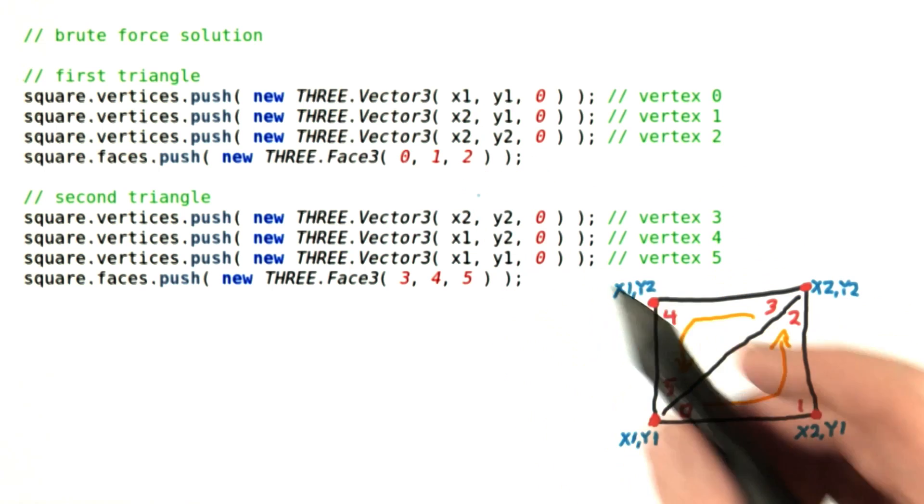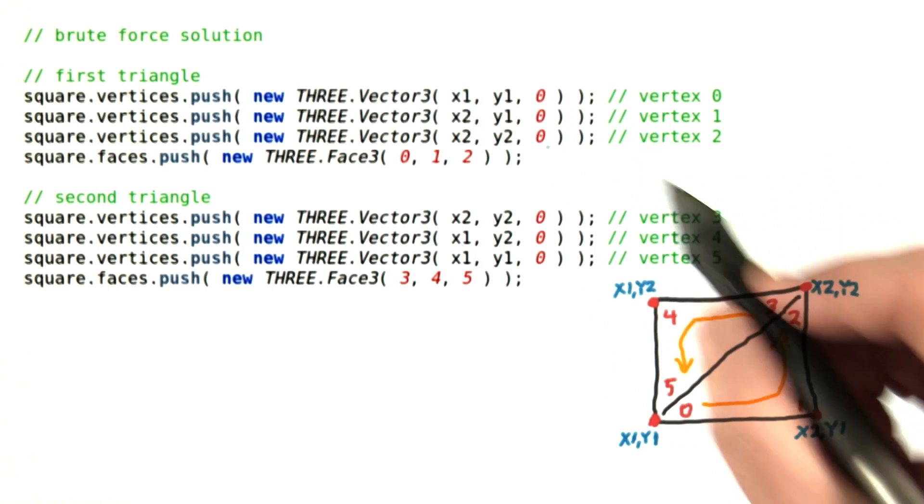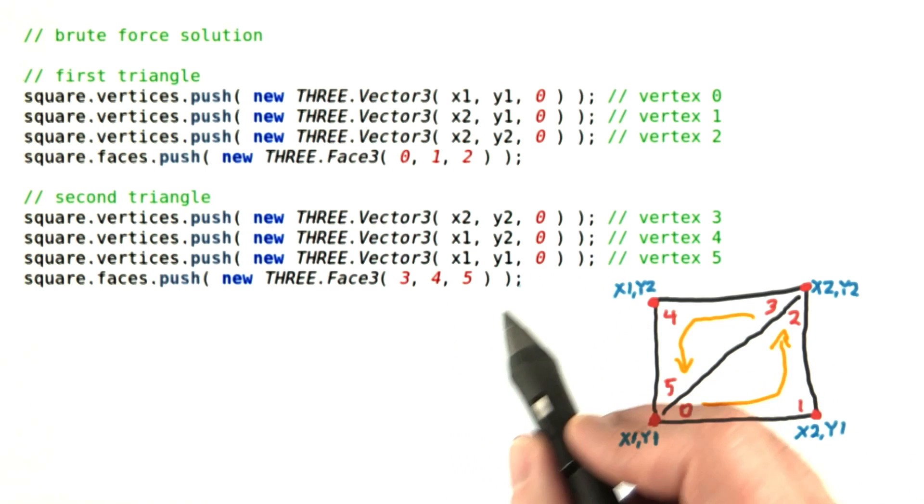So these four lines of code give you a triangle that goes from index 0, 1, and 2. These are the first three points right here. And then you have a second triangle, 3, 4, and 5, that are these three points.